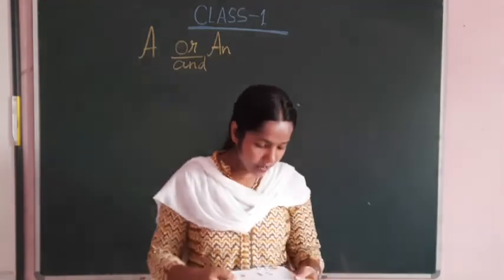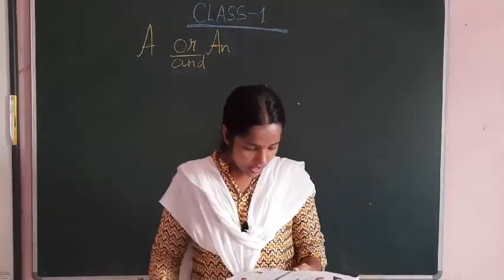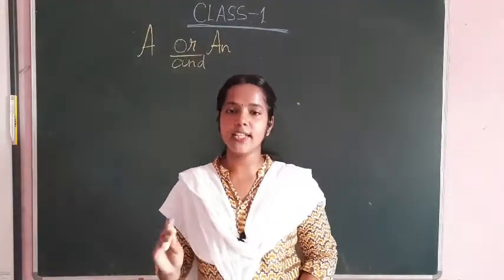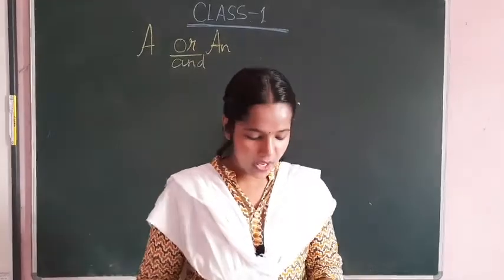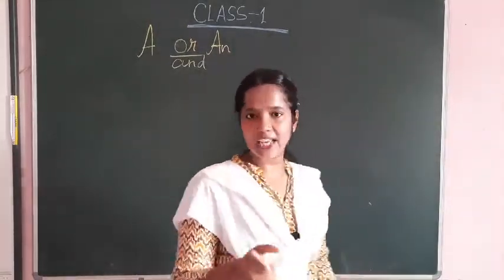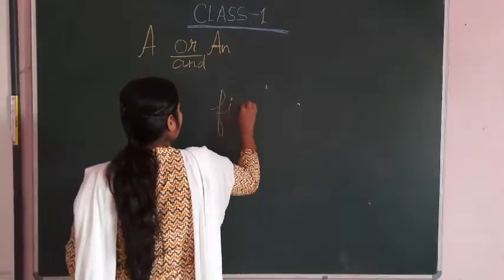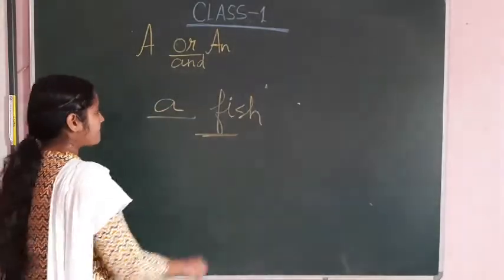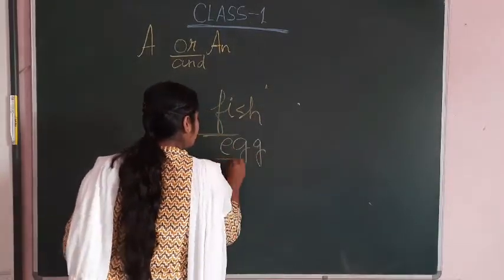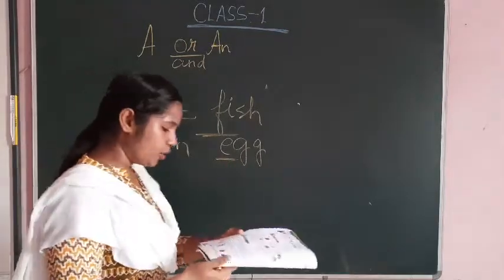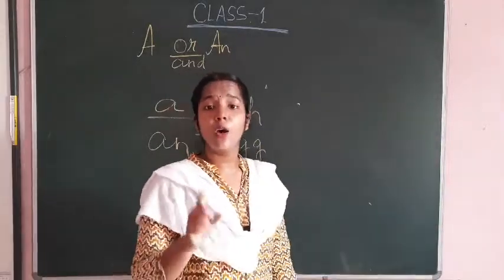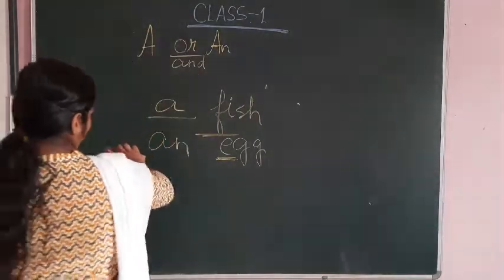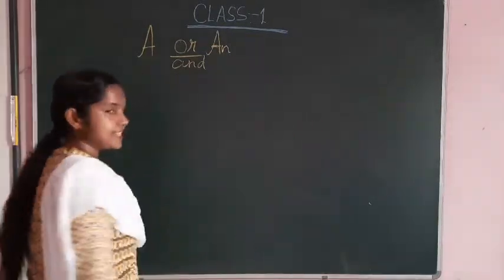Now coming to the next line, the noun that refers to one person, place, animal or thing, that are singular in number. I hope you know what is singular and what is plural. Singular means something is one and plural means many. And we use A before a noun that begins with a consonant. As I told you, if it's a consonant we will use A over here. And if it's a vowel, we will use An over here. It is written in your book. We use An before a noun that begins with a vowel sounding word. That is vowel.